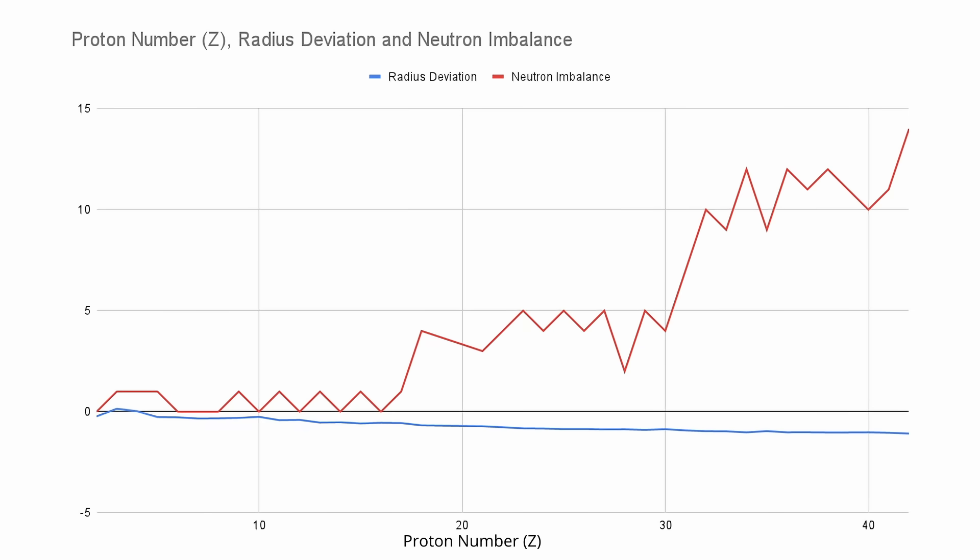Looking at the charge radius data across the periodic table, we see a clear pattern. The measured charge radius is generally smaller than the predicted value, and this discrepancy increases as proton number increases. If standard nuclear physics were correct in assuming that nuclear charge is evenly distributed, this trend should not exist.